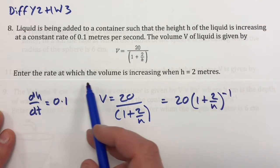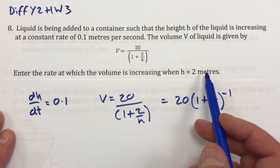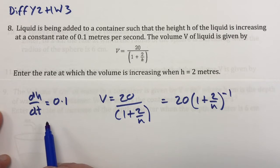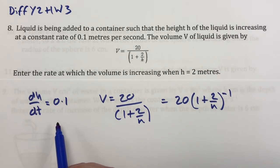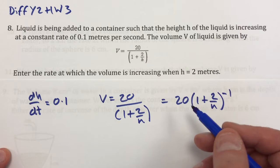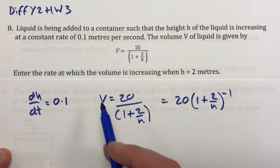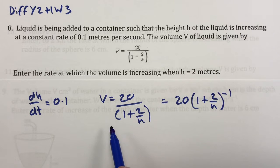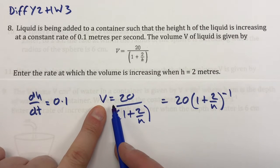Enter the rate at which the volume is increasing when h equals 2 meters, so standard punchline there. We need dV/dt and then all of that with respect to h, pop in h equals 2 and we're there. So we're going to need to differentiate first, dV/dh.